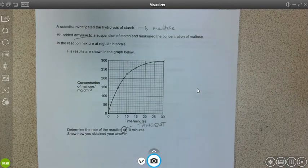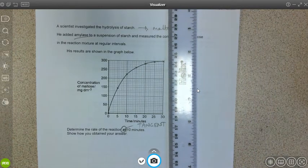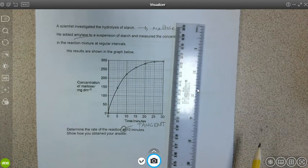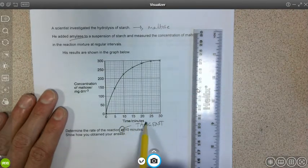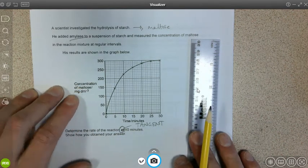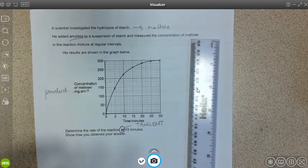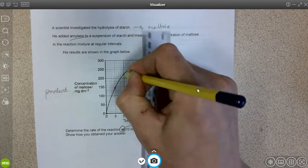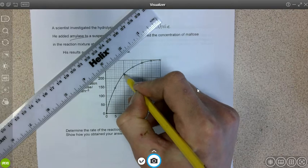Let's have a look at this one. To draw your tangent, you'll need a ruler, ideally a nice sharp pencil, and then follow these instructions. Firstly, read from the x-axis, on the x-axis we have the time, on the y-axis we have the concentration of the maltose product being formed, and then we read up from 10 minutes.